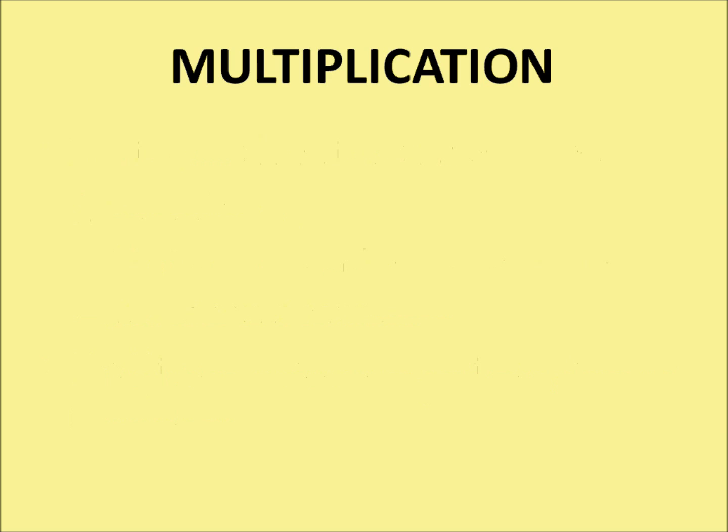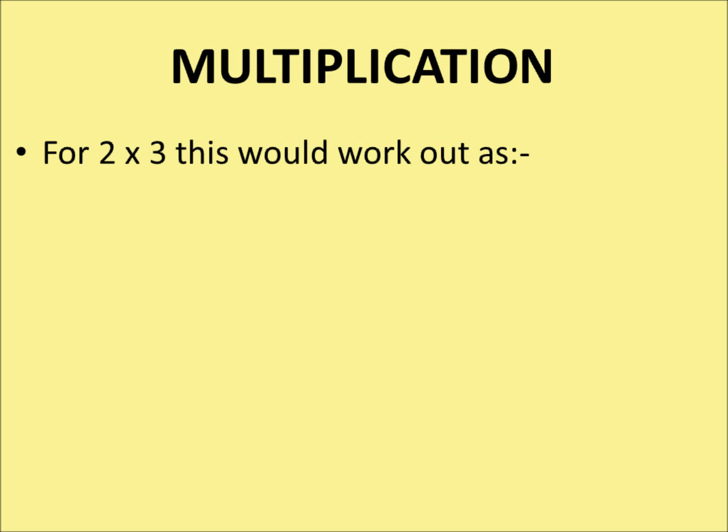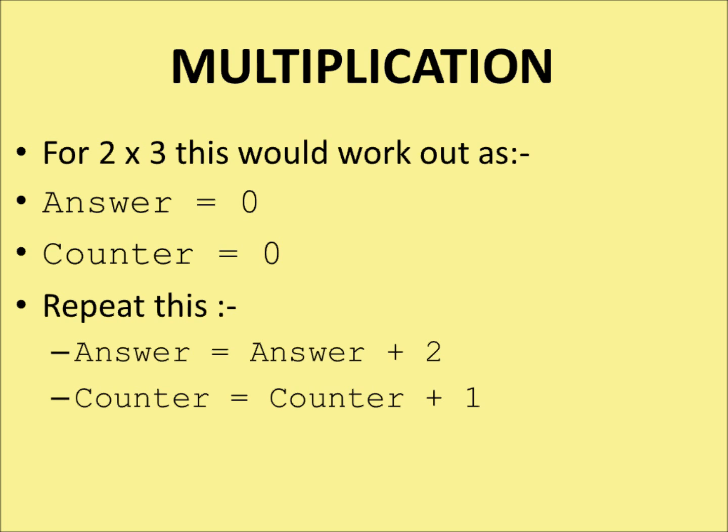Let's see a practical example. For 2 times 3, we're going to set the answer equal to 0. We also need to set the counter equal to 0 to make sure we're starting at the beginning. Now we get into the work. The new value of the answer is going to be the old value of the answer plus 2. Since we started off with 0, 0 plus 2 — the answer now becomes 2. We add 1 to the counter. The old value of the counter is 0, so 0 plus 1 is 1, and the counter becomes 1.